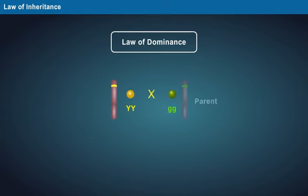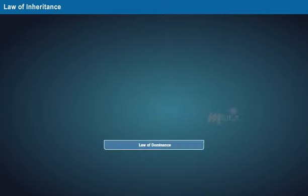This formed the basis for generating the law of dominance which states that in a cross of parents that are pure for contrasting traits, only one form of the trait will appear in the next generation. Offspring with heterozygous trait will express only the dominant trait in the phenotype.